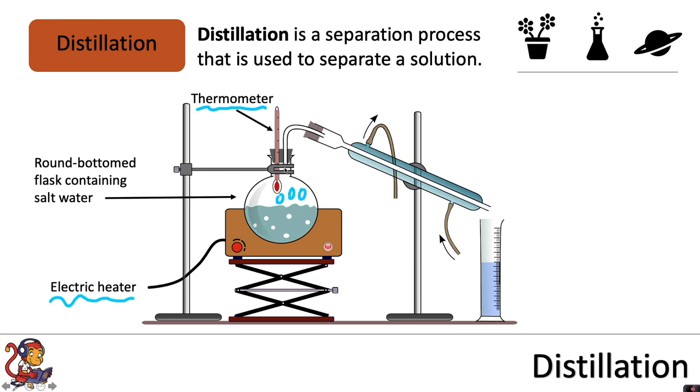The water vapour then travels up this tube until it reaches the next part of the distillation equipment. This is called a condenser.